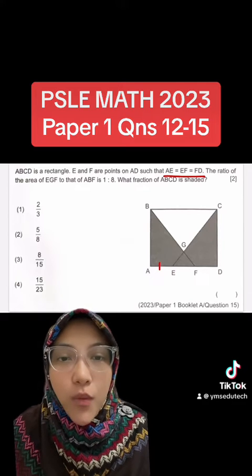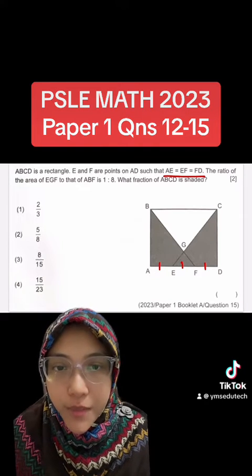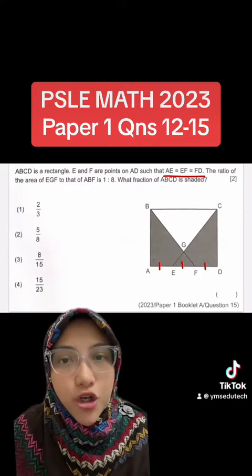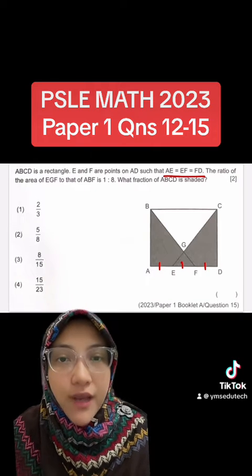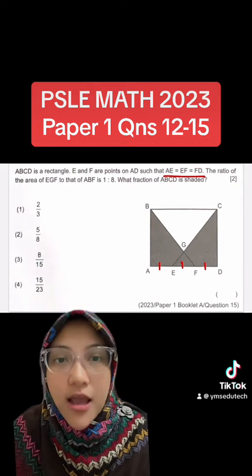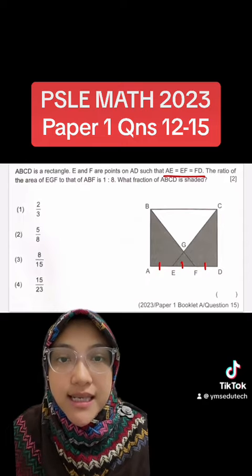We're going to annotate that on the diagram itself. The ratio of the area of EGF to that of ABF is 1 is to 8. What fraction of ABCD is shaded?